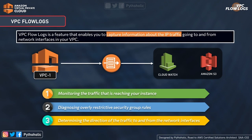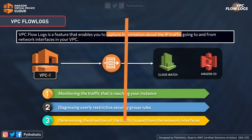The first benefit is monitoring the traffic that is reaching your instance — helpful for reviewing incoming requests and analyzing or making changes to the application depending on what type of logs you receive. The second is diagnosing overly restrictive security group rules, which can help figure out connectivity issues with instances or services. The third is determining the direction of traffic to and from network interfaces, since flow log formats contain information about source and target instances or services, which also helps with debugging.